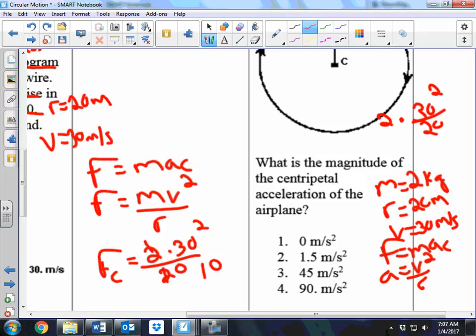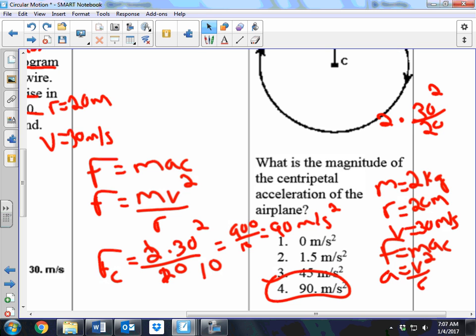And then 30 squared, what is that? 900. So 900 divided by 10. So I should get, what, 90 meters per second squared if I'm doing my math correctly off the top of my head. And that gives you the answer of four.